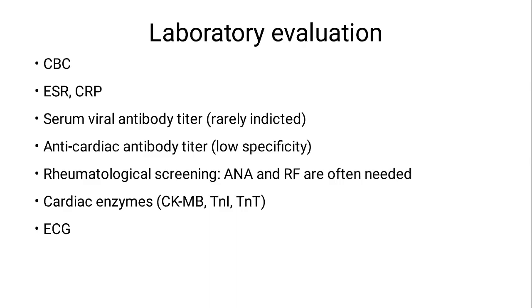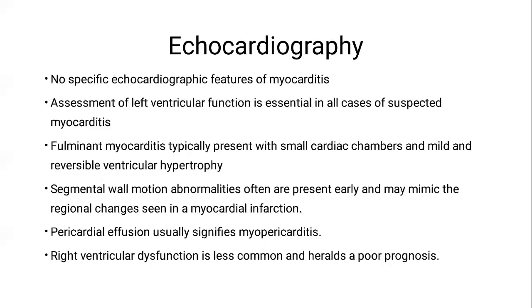The electrocardiogram helps you detect arrhythmia and show specific manifestations. As mentioned, right bundle branch block is peculiar for Chagas disease. Regarding the echocardiogram, there is no single specific echocardiographic feature to distinguish myocarditis. However, assessment of left ventricular function is essential for both diagnosis and prognosis, as it supports the presence of myocardial damage. Assessment of right ventricular function is also important, as it has a prognostic role. Assessment of pulmonary artery pressure is very important.